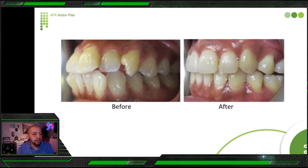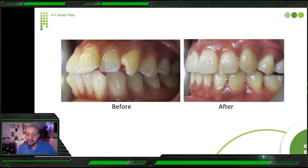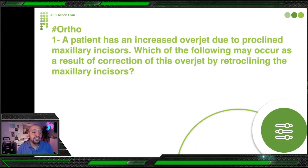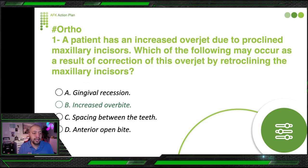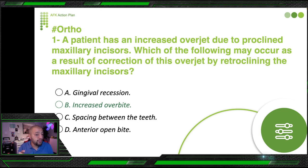Back to the question: the patient has increased overjet because of proclined anterior teeth, and we are going to solve it by retroclining the teeth — making the teeth go backward. When we retrocline the upper anterior teeth, the overjet will decrease but the overbite will increase. So the answer is increased overbite. Understand the four terms — overjet, overbite, proclining, retroclining — and you can solve any similar question.